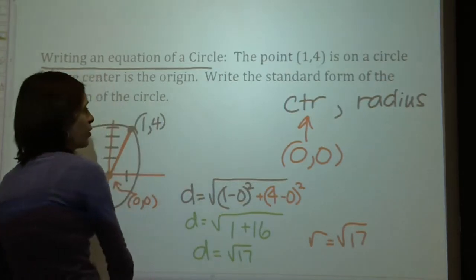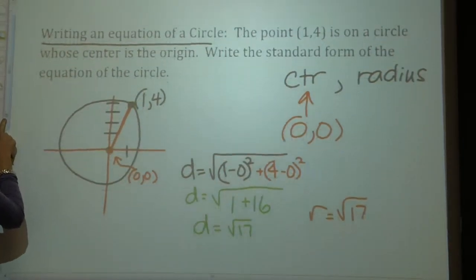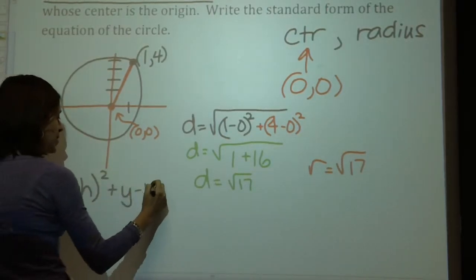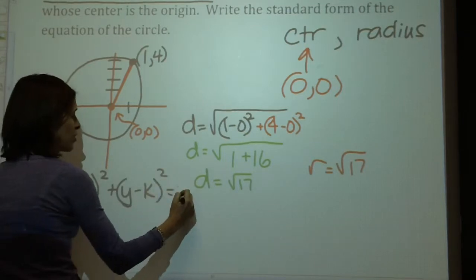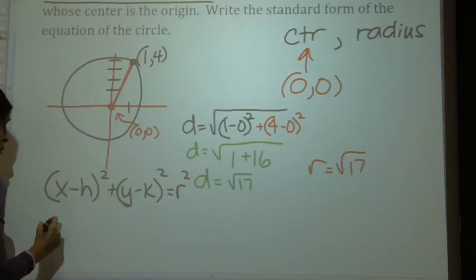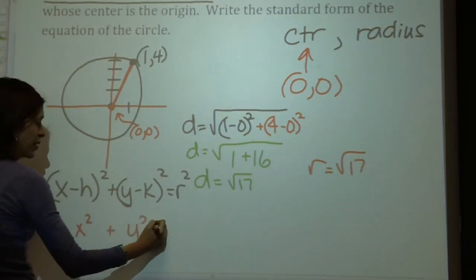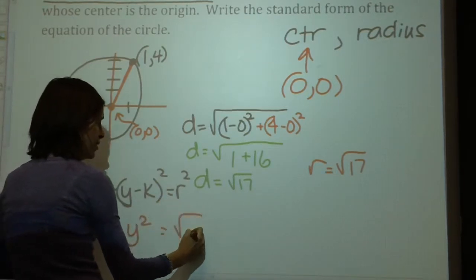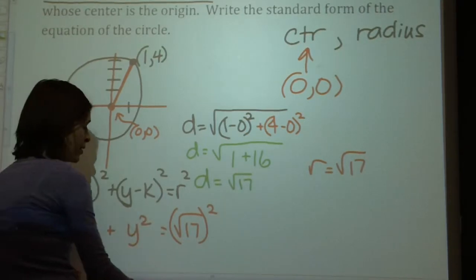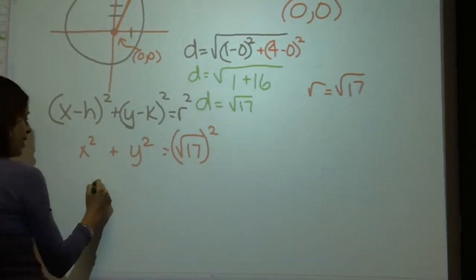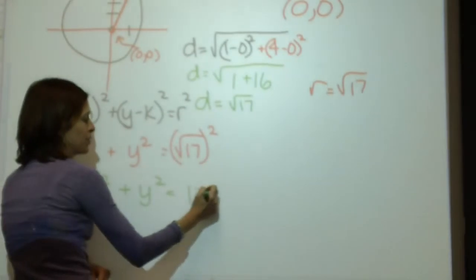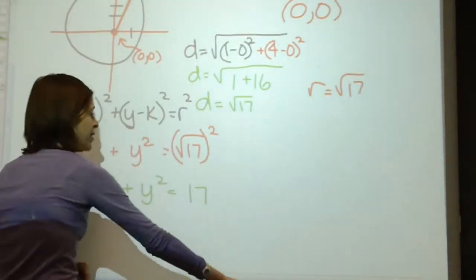Now I go back to my equation of a circle: x minus h squared plus y minus k squared equals r squared. I plug in the information I have. My center is the origin, so it works out to x squared plus y squared. My r is root 17, but remember I have to square it — be very careful. When I square a square root, it goes away, so my final equation is x squared plus y squared equals 17.